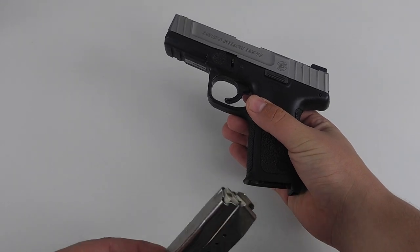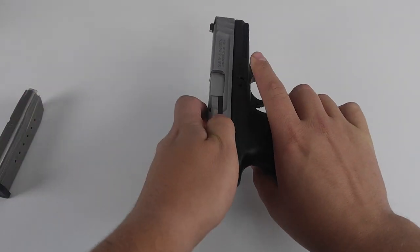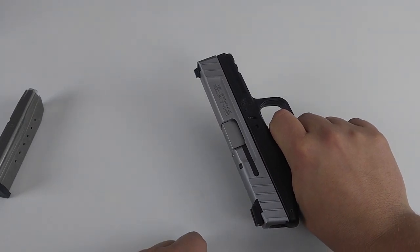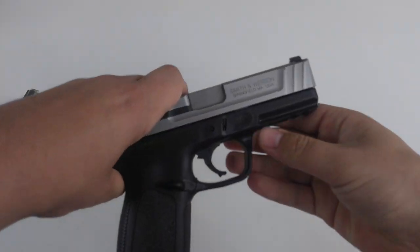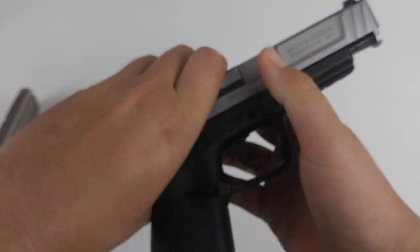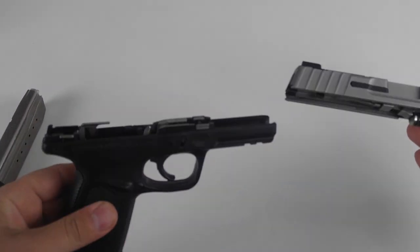So the first thing we're going to do is remove the magazine and make sure that the gun is empty. So now that we know it's empty, we're going to go ahead and pull the trigger and that will allow us to use the slide release right here to take the gun apart.